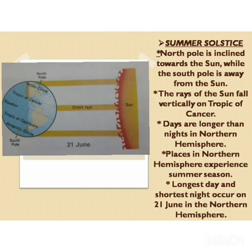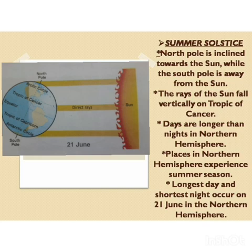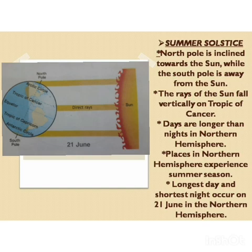The first is the summer solstice on 21st June. During this time, the north pole is inclined toward the sun while the south pole is away from the sun. The rays of the sun fall vertically over the Tropic of Cancer, so a larger portion of the northern hemisphere receives heat and light. The southern hemisphere remains in darkness. Days are longer than nights in the northern hemisphere, which experiences summer season. 21st June has the longest day and shortest night in the northern hemisphere.